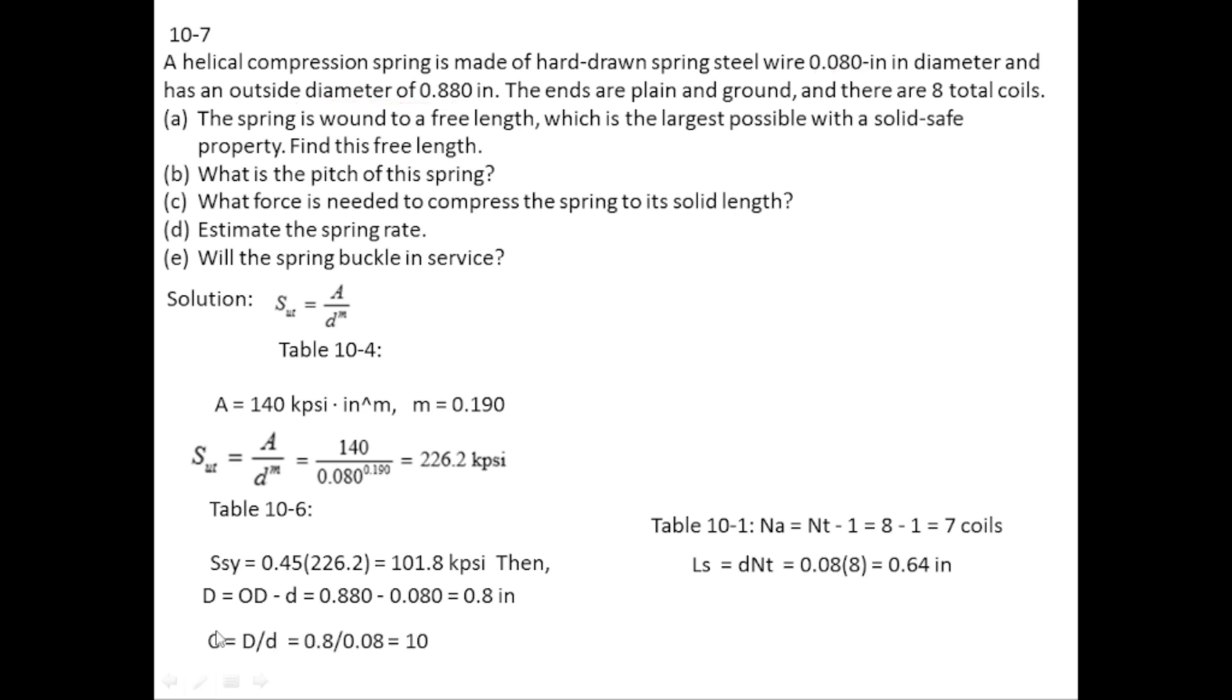And C is the ratio between mean coil diameter and the wire diameter. So 0.8 divided by 0.08 will give you 10. So C is equal to 10. Now KB is equal to 4C plus 2 divided by 4C minus 3. C is equal to 10, so KB is equal to 42 divided by 37 that will give you 1.135.